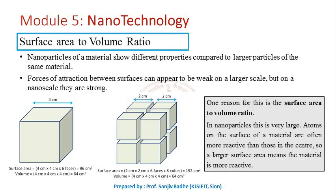One important reason why properties change when materials are reduced to the nanoscale is the surface area to volume ratio. The surface area to volume ratio increases as the size of particles is reduced, and in nanomaterials this surface area to volume ratio is very, very large.